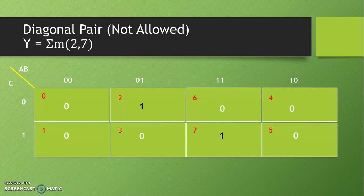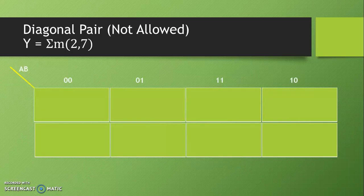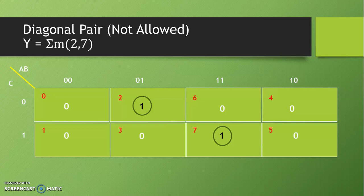Now we can see that we have 2 ones in the K-map and if we try to make a pair diagonally, then it is wrong — diagonal pairs are not allowed. Instead, if we look at minterms 2 and 7 again, pair is not possible in this case. So we have to go for individual ones, a group of single ones. This might be possible, but diagonal pair is not allowed.